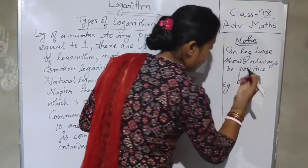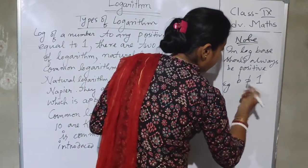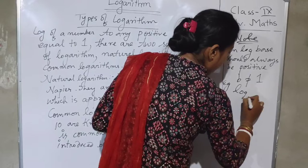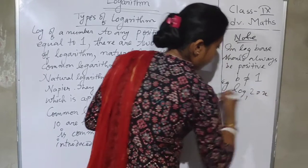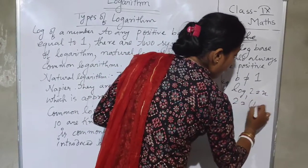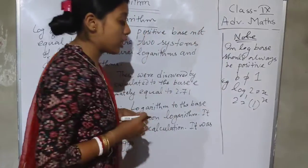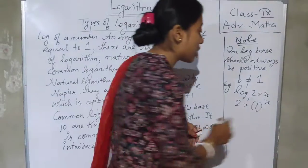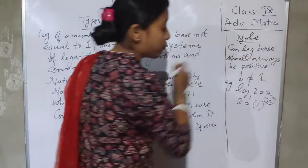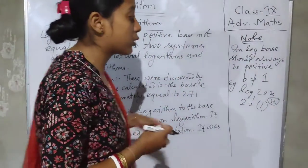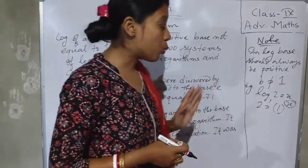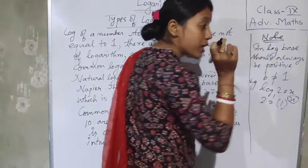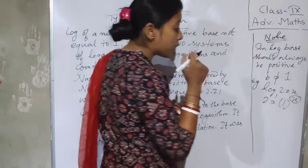For example, if the base is 1, can we find the value? Consider log base 1 of 2. This becomes 2 equal to 1 to the power x. We cannot find the index x here, because 1 to any power is always 1. So the conclusion is that the base cannot be 1. The base should always be positive and not equal to 1.